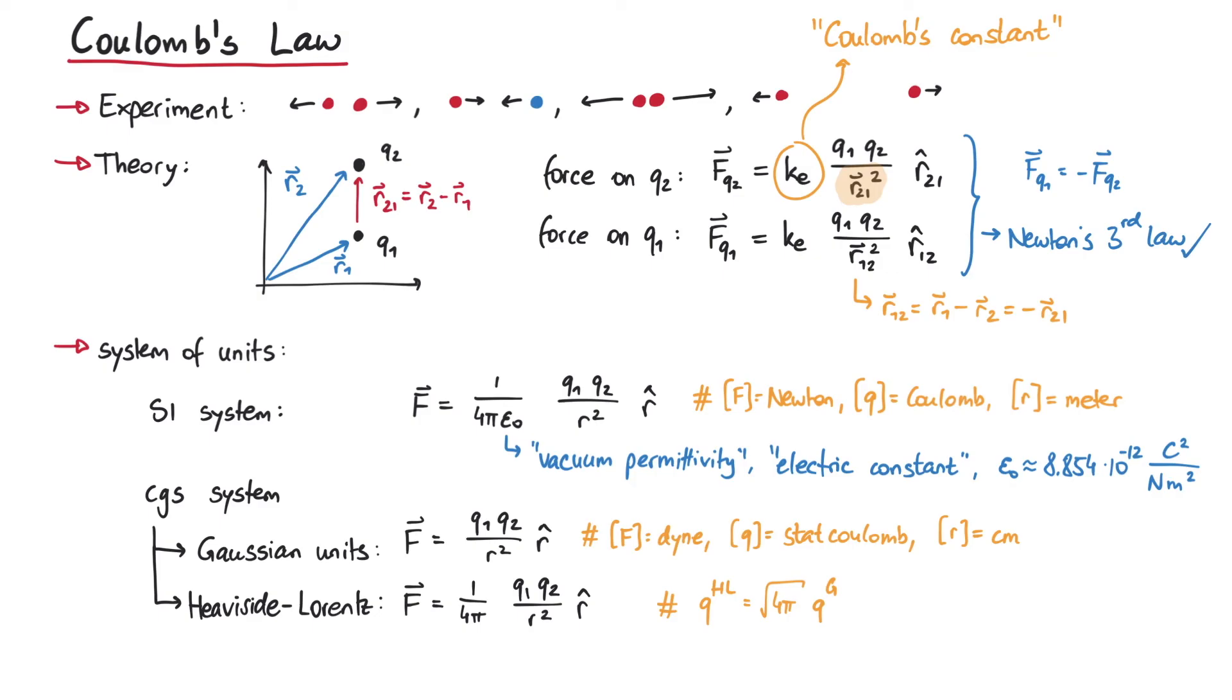So, the same charge that is measured to be 1 stat coulomb in the Gaussian system would be measured as the square root of 4 pi stat coulombs in the Heaviside-Lorentz units.